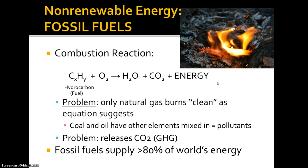Anytime fossil fuels are burned — whether coal, oil, or natural gas — water, carbon dioxide, and energy are released. The problem is that equation makes it look totally clean, with no other air pollutants like sulfur dioxide or nitrogen oxides. That's not accurate. This equation is actually pretty consistent with natural gas, which burns clean. But coal and oil have other things mixed in — heavy metals, sulfur, nitrogen — and when burned, those become airborne too. That is a huge drawback.